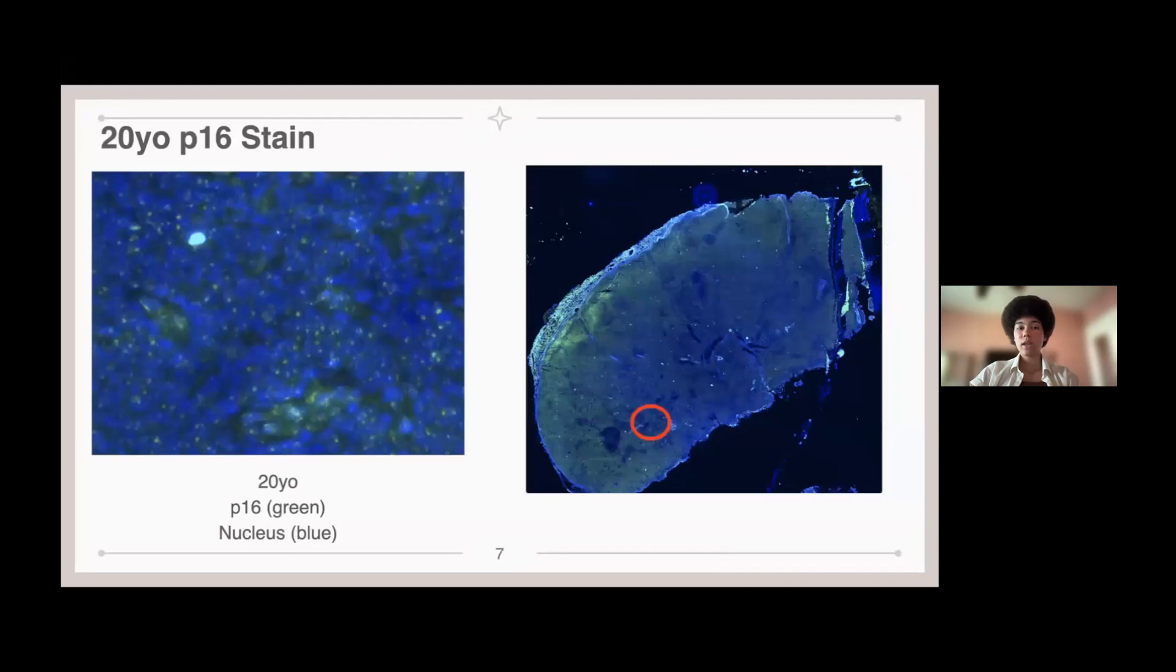And then this was the actual staining for the P16 on the 20-year-old. The P16 is in green, and then the nucleus is in blue. Tissues are naturally autofluorescent and emit green light. So a lot of this is actually so-called background. What we actually are looking for is the P16 within the nucleus.